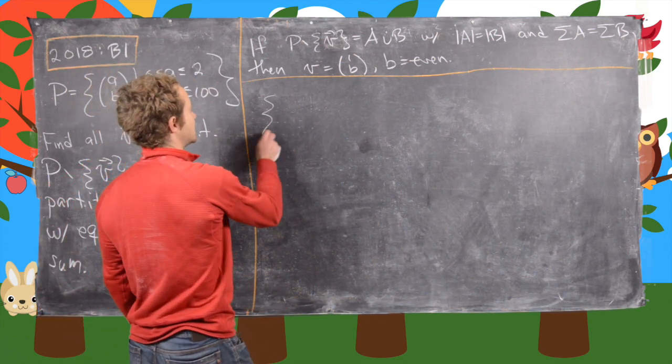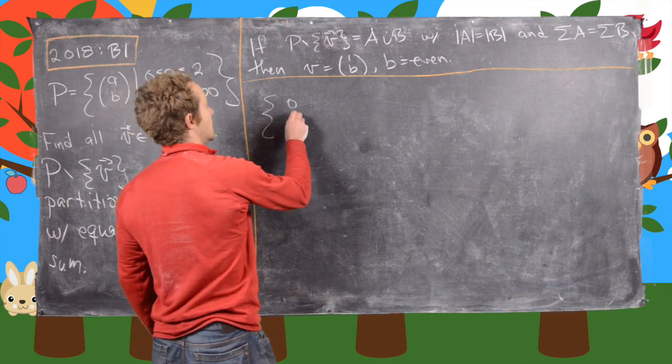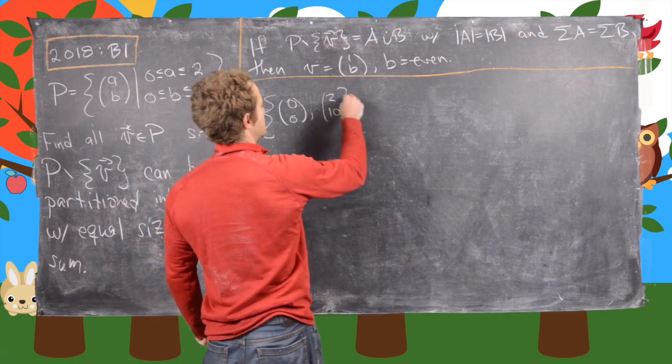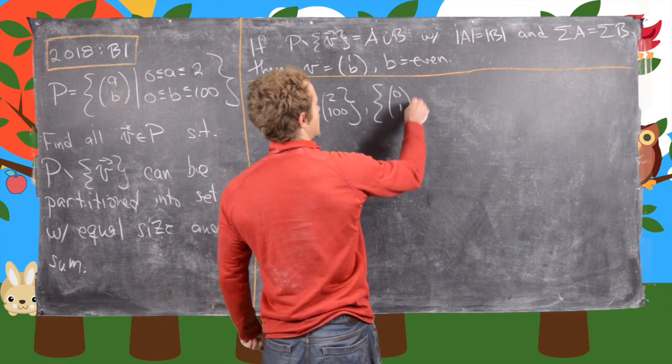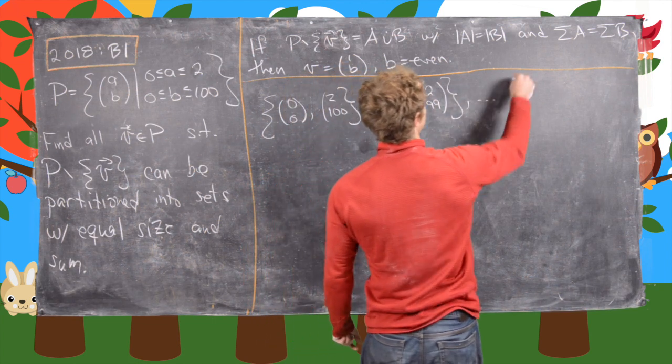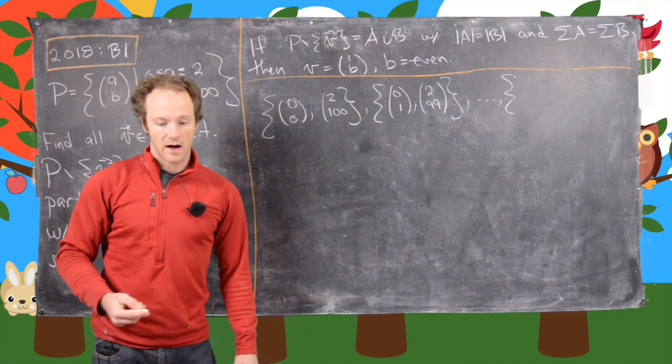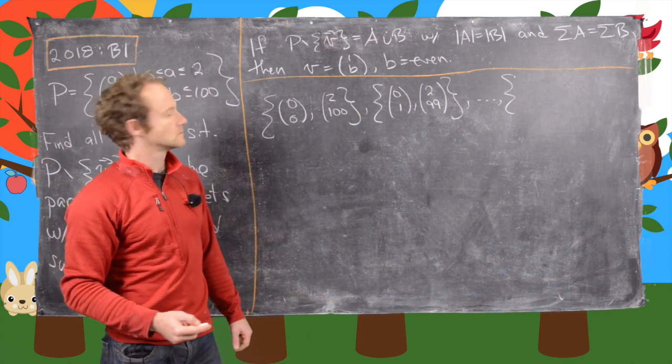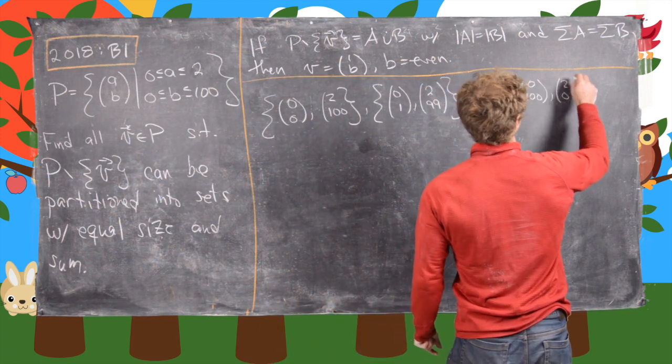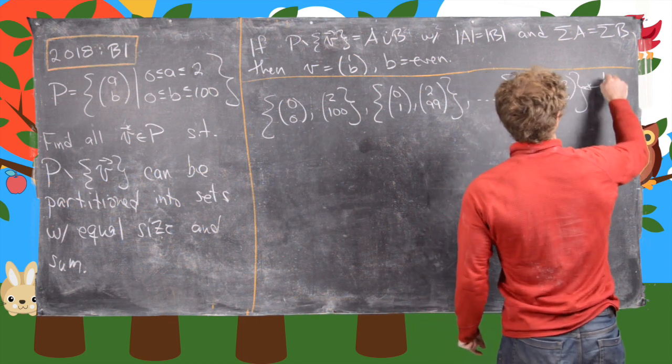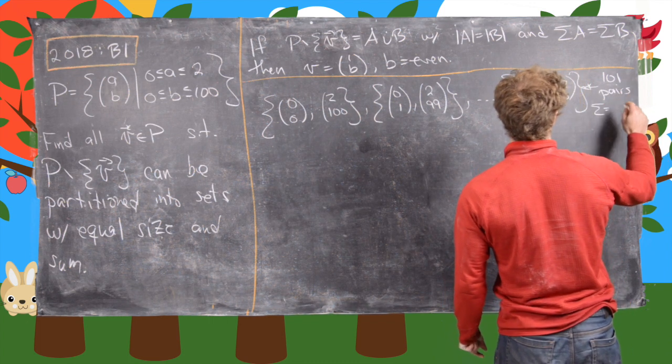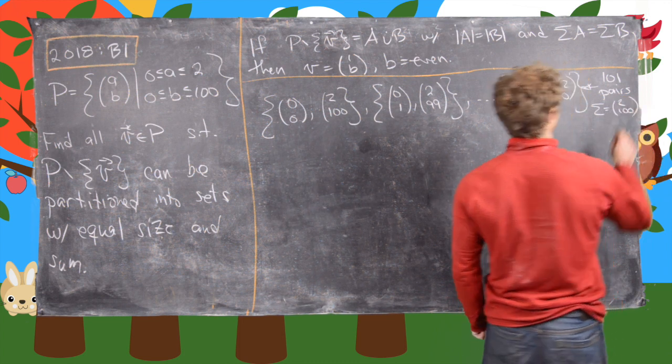The first set of pairs are as follows: vector (0,0) is paired with vector (2,100). Vector (0,1) is paired with vector (2,99), and so on, up to vector (0,100) is paired with vector (2,0). Notice this is 101 pairs of vectors, each with their sum equal to (2,100).